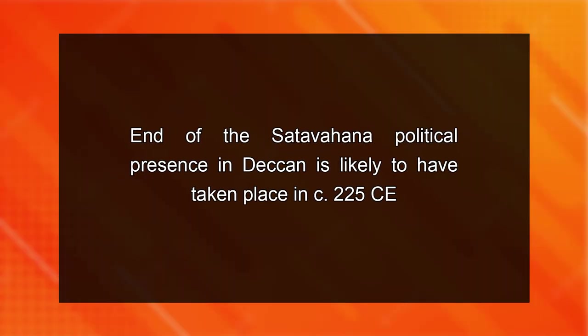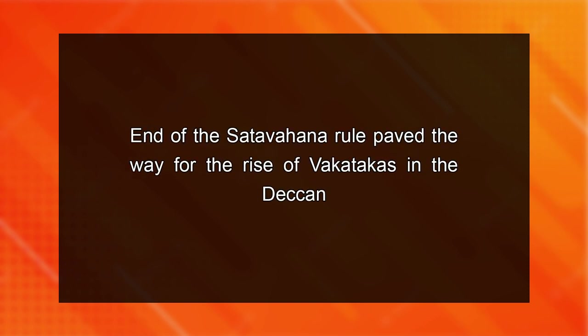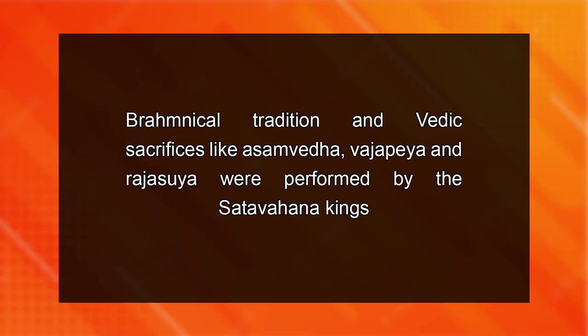The end of the Satavahana political presence in the Deccan is likely to have taken place in 225 CE. The end of Satavahana rule paved the way for the rise of the Vakatakas in the Deccan. The interest of Satavahanas in commercial activities is reflected in their regular issuance of coins with ship motifs, both single and double-masted. Grand epithets were bestowed upon Satavahana rulers when they were compared in valour with several epic heroes. Brahmanical tradition and Vedic sacrifices like Ashwamedha, Vajapeya and Rajasuya were performed by the Satavahana kings.